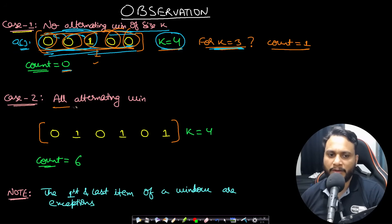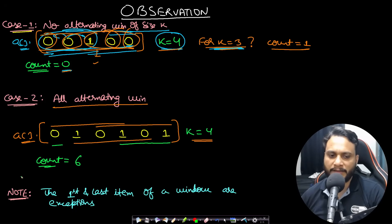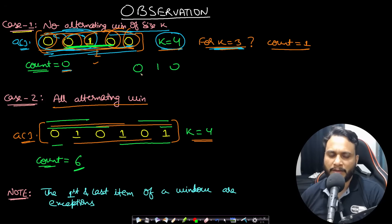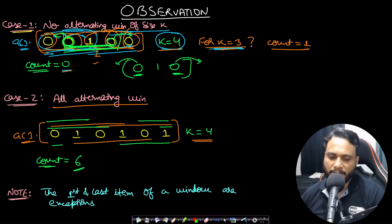Another extreme case is that all windows may be alternating. For example, with a perfectly alternating array and window size four, all six windows are alternating, giving count six. Note that the first and last tiles in any window are exceptions — we do not compare the leftmost tile to its left or the rightmost tile to its right. That is why a window like 0, 1, 0 is valid even though both ends are zero.